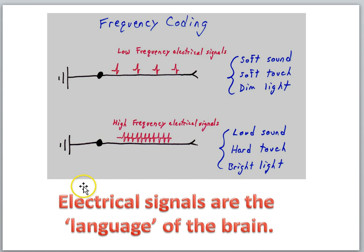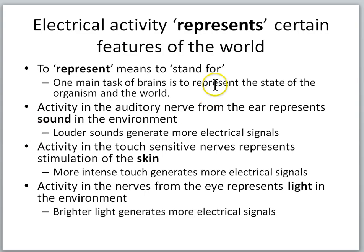So this is one way in which neurons can carry information. Electrical signals are the language of the brain. In this slide then we'll introduce this term of representation. Electrical activity can represent certain features of the world. And to represent means to sort of stand for. And one of the main tasks of brains is to represent the state of the organism in the world.